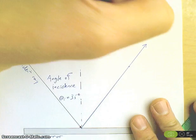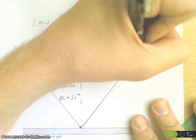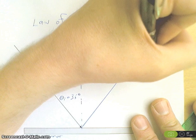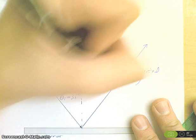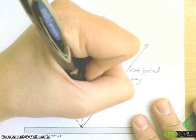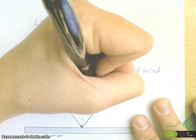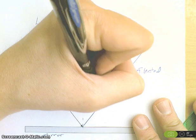This is my reflected ray. And, again, this angle, theta sub r, is equal to 36 degrees.